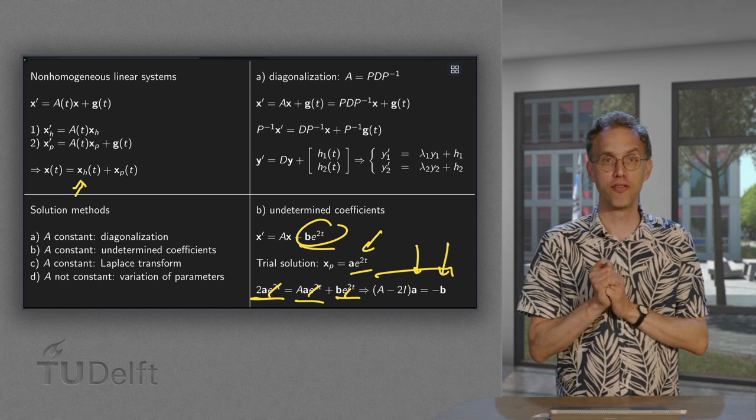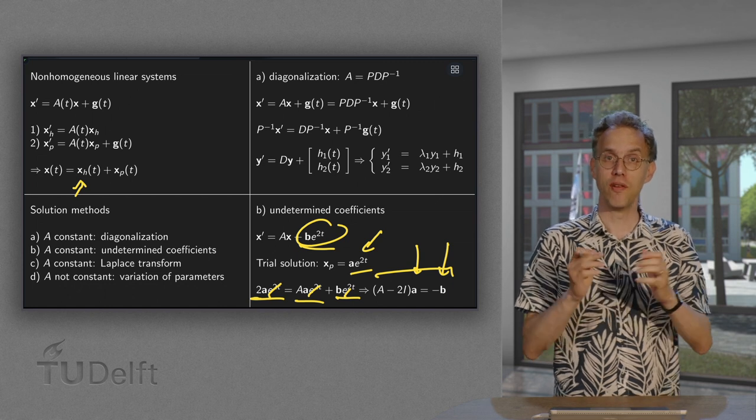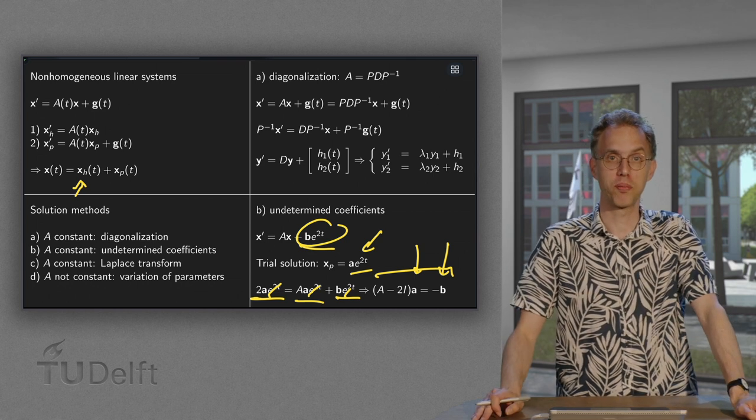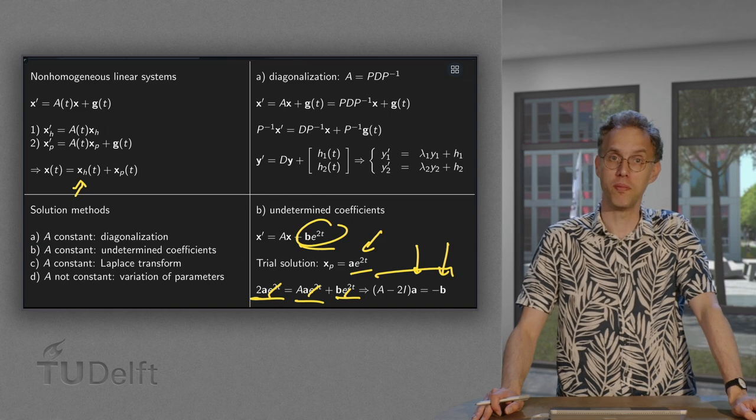So those are four methods, all with their pros and cons. We looked a bit more into the first two, but for some other problems, methods C and D also may be better choices.